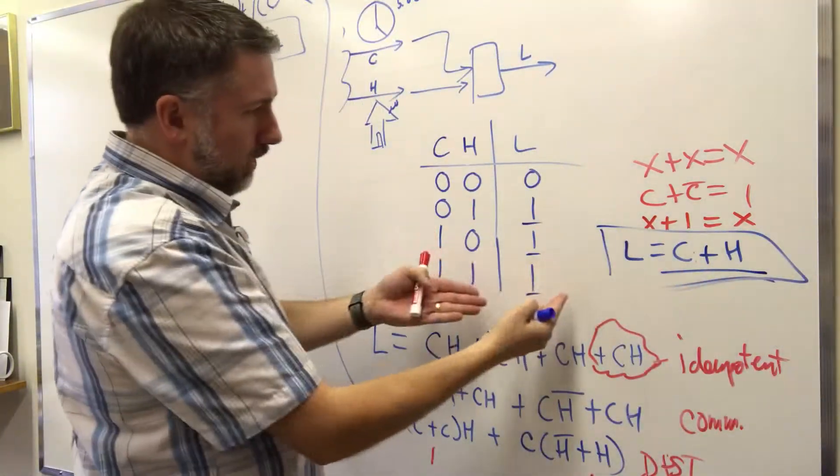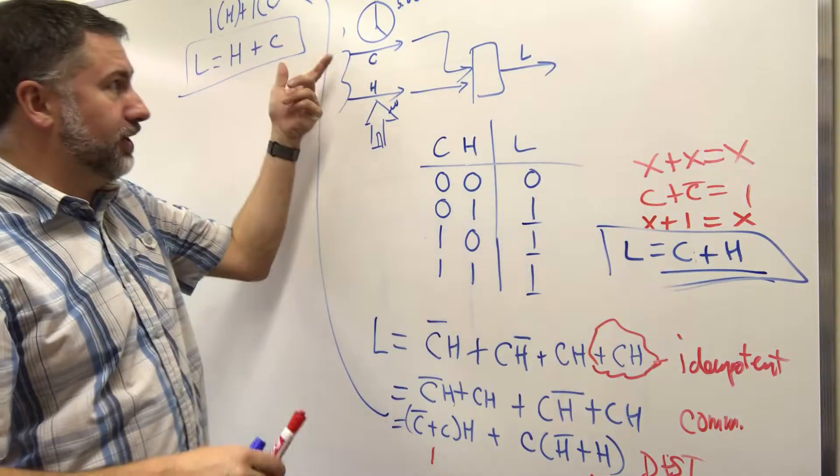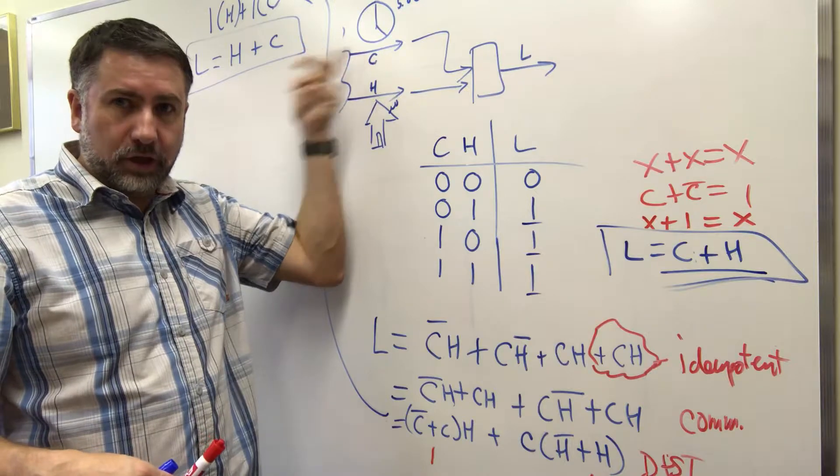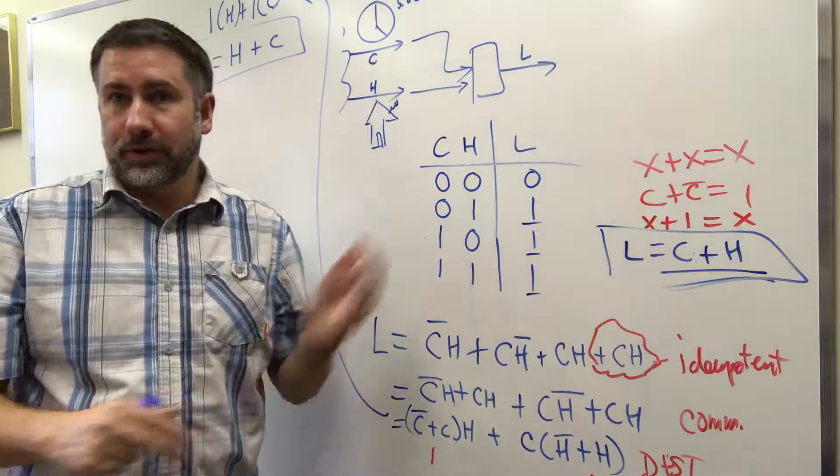This was just looking at it. We knew this was an OR gate, right? And describing the problem, we said, or, right? If the clock is at five o'clock or I arrive home, the light should be on. So we already know that that was the answer.